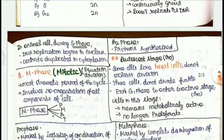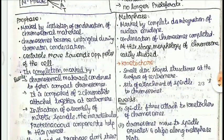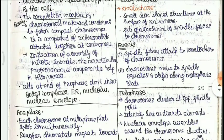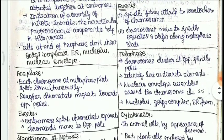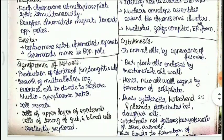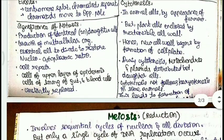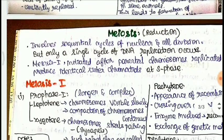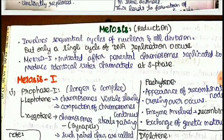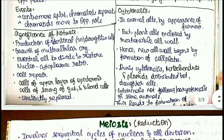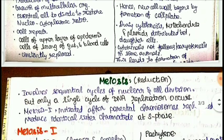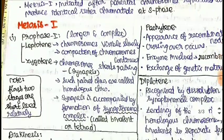Next is M phase, also called equational division. It includes prophase, metaphase, anaphase, and telophase. The events of each phase are very important and easy to learn — especially if you have already studied NCERT or the state board syllabus. Once you learn the notes, it will be easier to understand and retain the important points in your memory for a longer period.